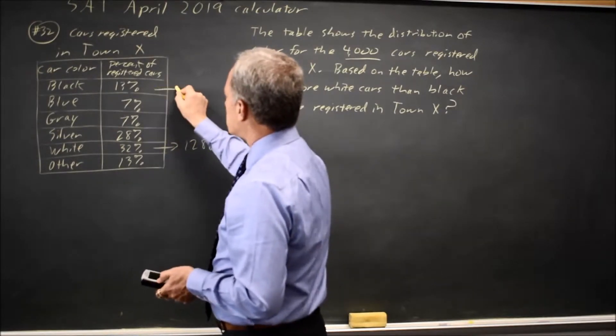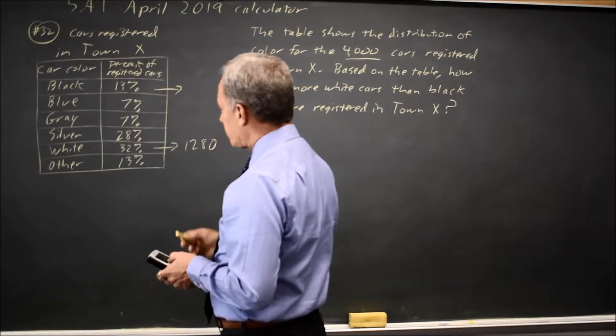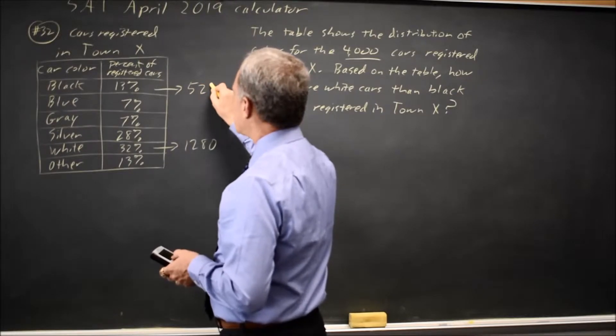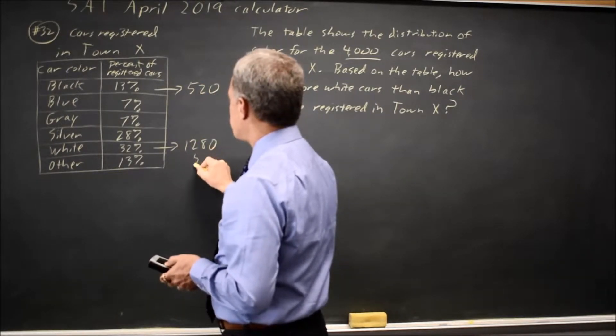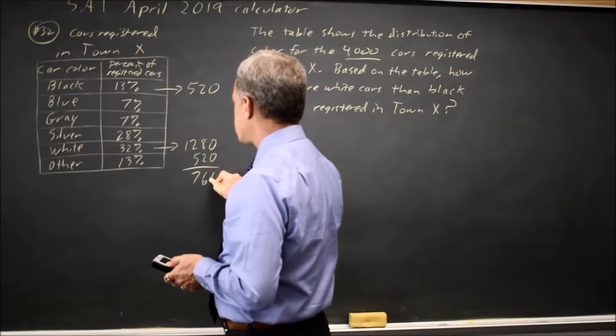And the number of black cars, which is 13% of 4,000, is 520. And 1,280 minus 520 is 760.